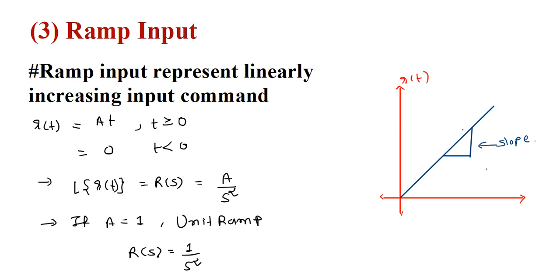In the s or frequency domain, by taking the Laplace transform: Laplace of r(t) equals R(s) equal to a divided by s squared. If a is equal to 1 it is called the unit ramp and is given by R(s) equal to 1 upon s squared.